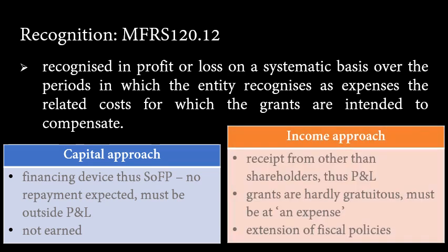The proponent of the income approach, on the other hand, argues that because government grants are received from a source other than shareholders, they should not be recognized directly in equity, but should be recognized in profit or loss in appropriate periods. They also argue that government grants are rarely gratuitous or free — that is, without cost. They believe that an entity earns them through compliance with the conditions and meeting the envisaged obligations. They should therefore be recognized in profit or loss over the periods in which the entity recognizes as expenses the related costs for which the grant is intended to compensate.